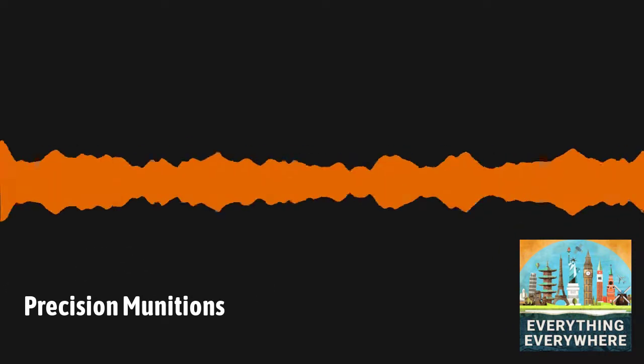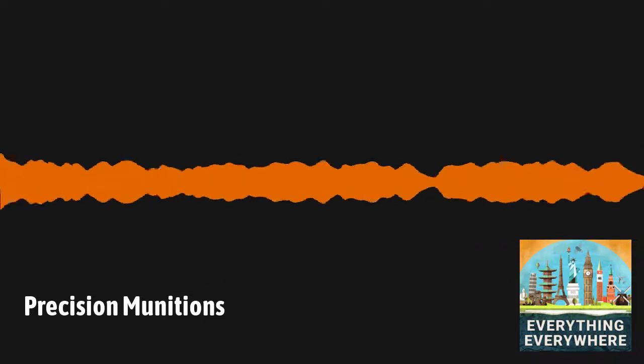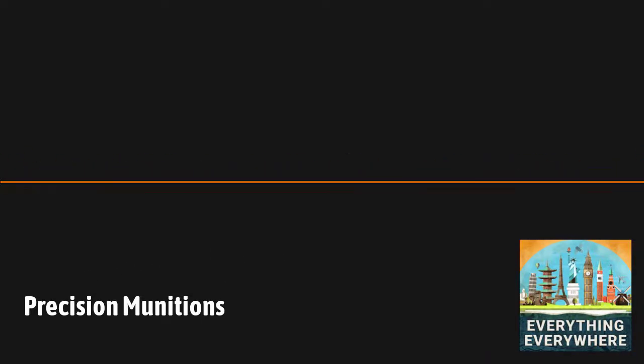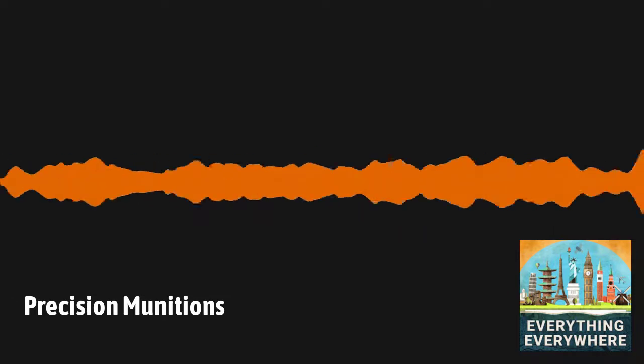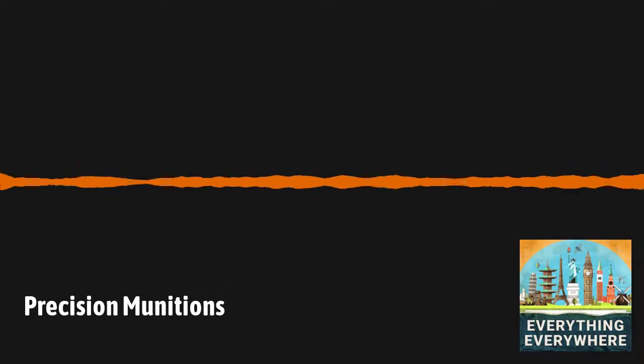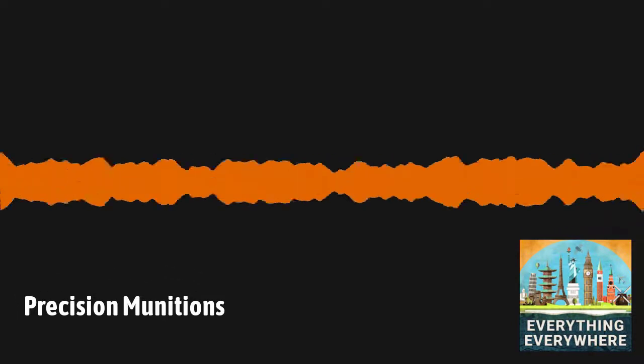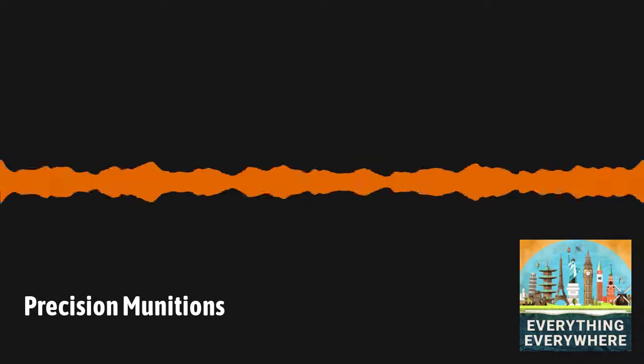These bombs were extremely expensive, as computer chips were not yet cheap nor powerful, which limited their use. In the aftermath of the not-so-successful Vietnam War, the U.S. military did a critical assessment of their entire way of fighting. One of the things that they looked at was developing more and better precision munitions.